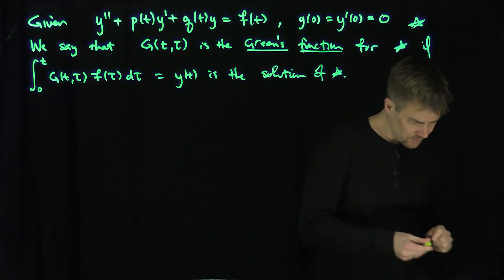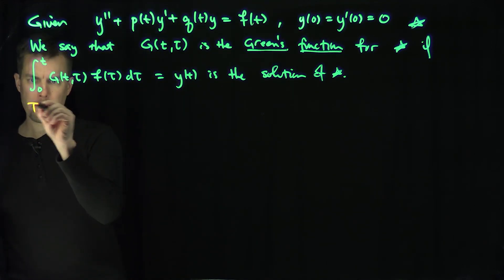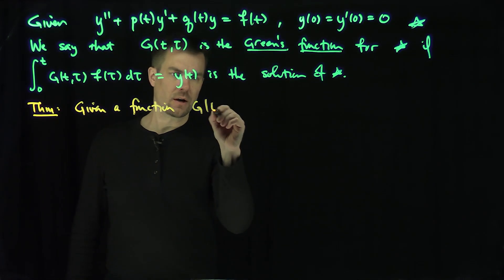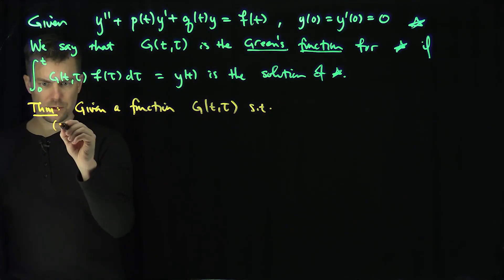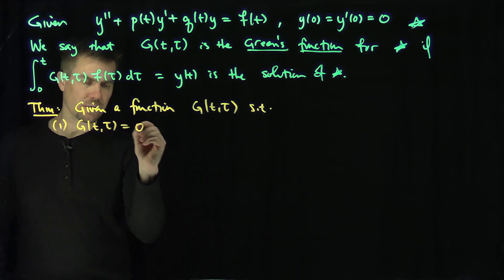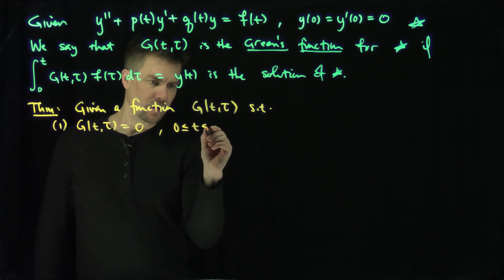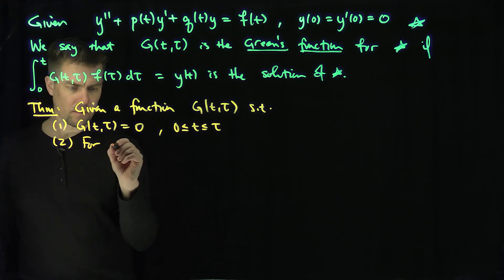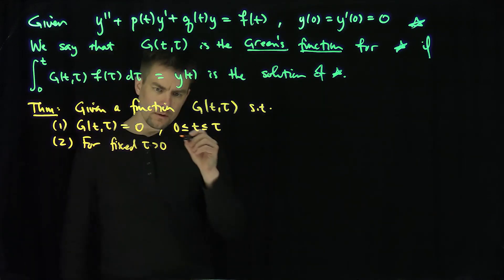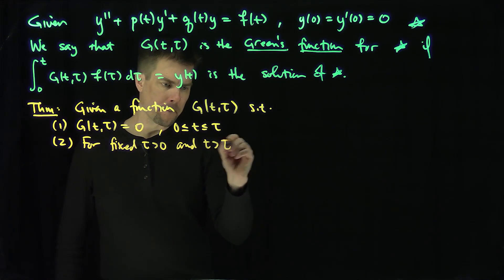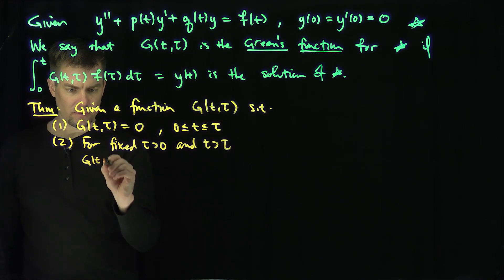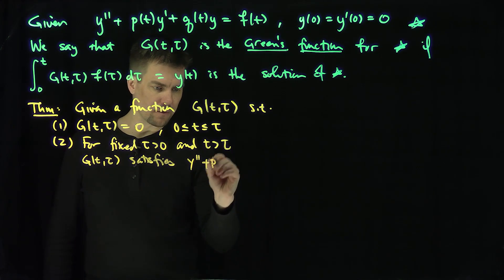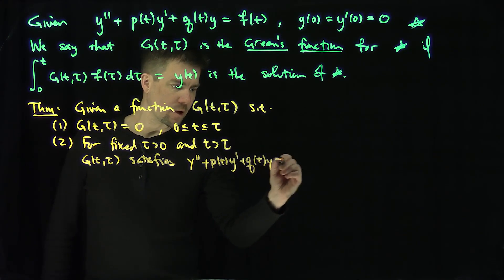Here's the primary theorem about Green's functions. If I'm given a function g(t, τ) such that three things are true: one, g(t, τ) = 0 for 0 ≤ t ≤ τ; and two, for a fixed τ > 0 and t > τ, the function g as a function of t satisfies y'' + p(t)y' + q(t)y = 0, satisfying the homogeneous problem.